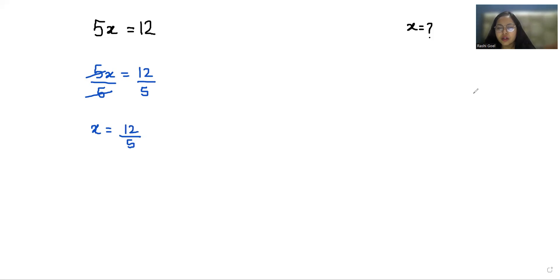Now our numerator is greater than the denominator, so we can convert this improper fraction to a mixed fraction. So 12 here and 5 here. 5 times 2 is 10, with a remainder of 2. So we can write it as 2 and 2/5, or we can convert it to decimal as well.